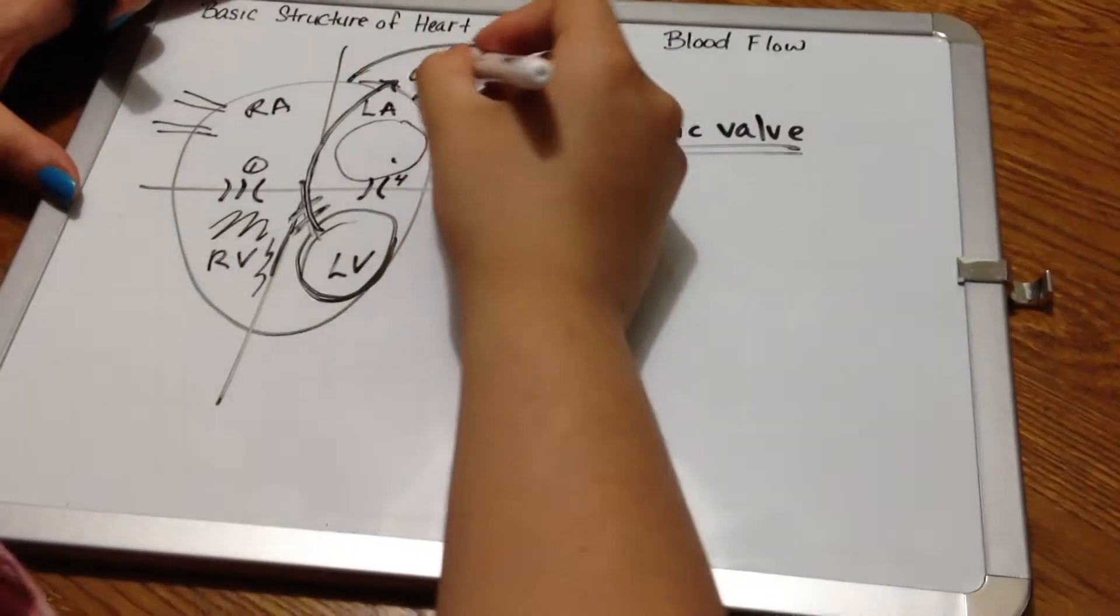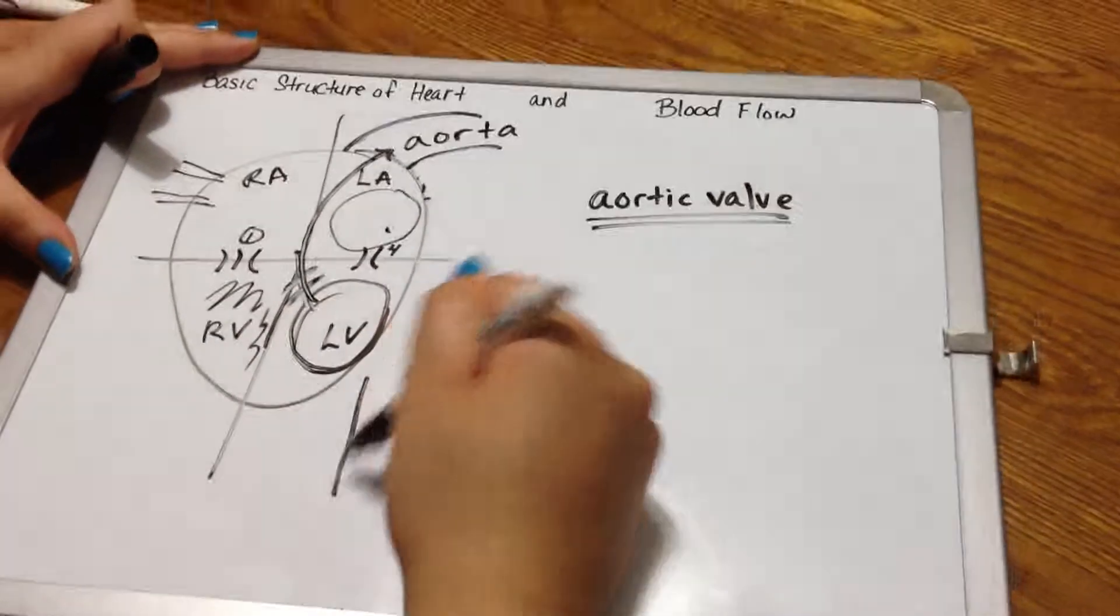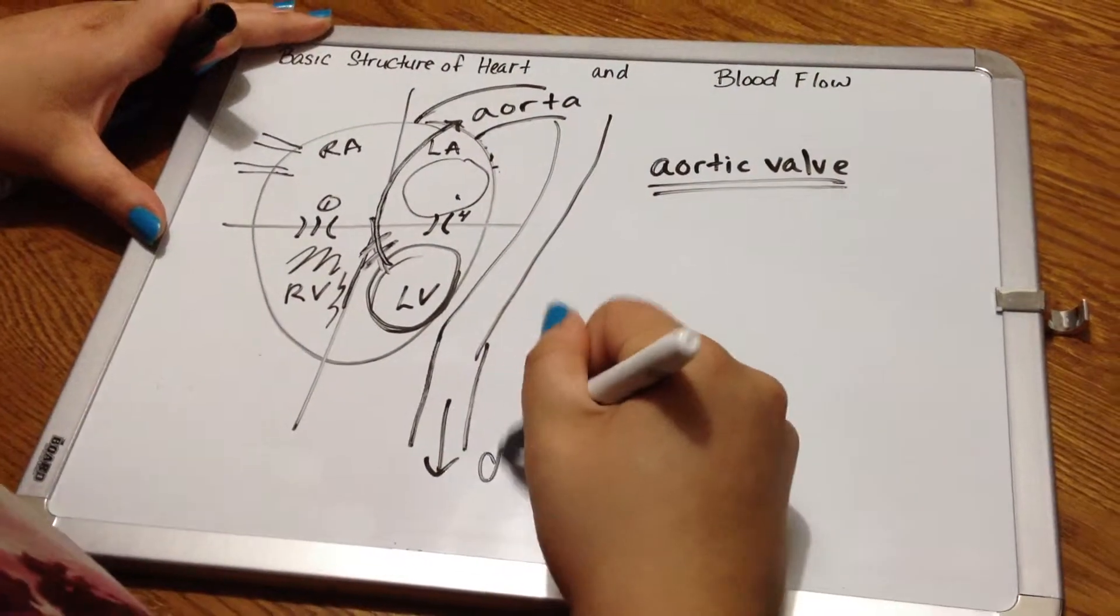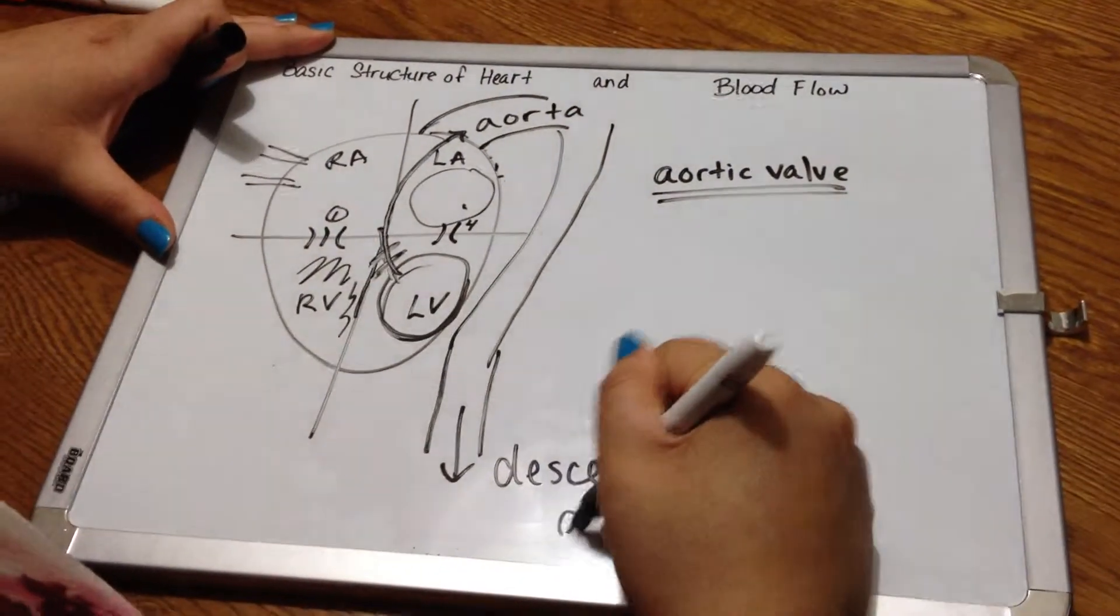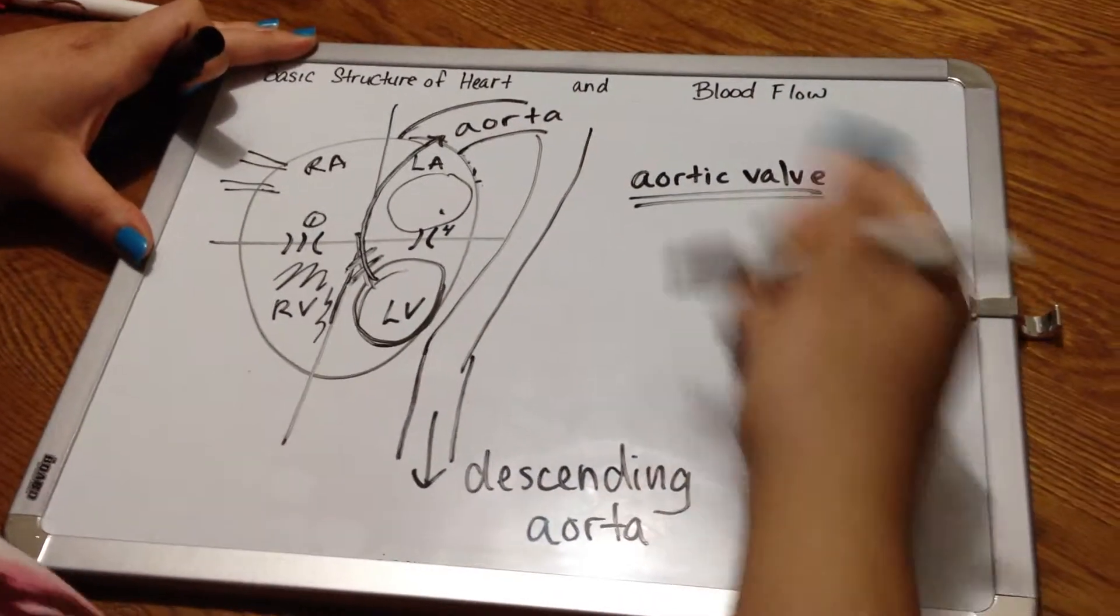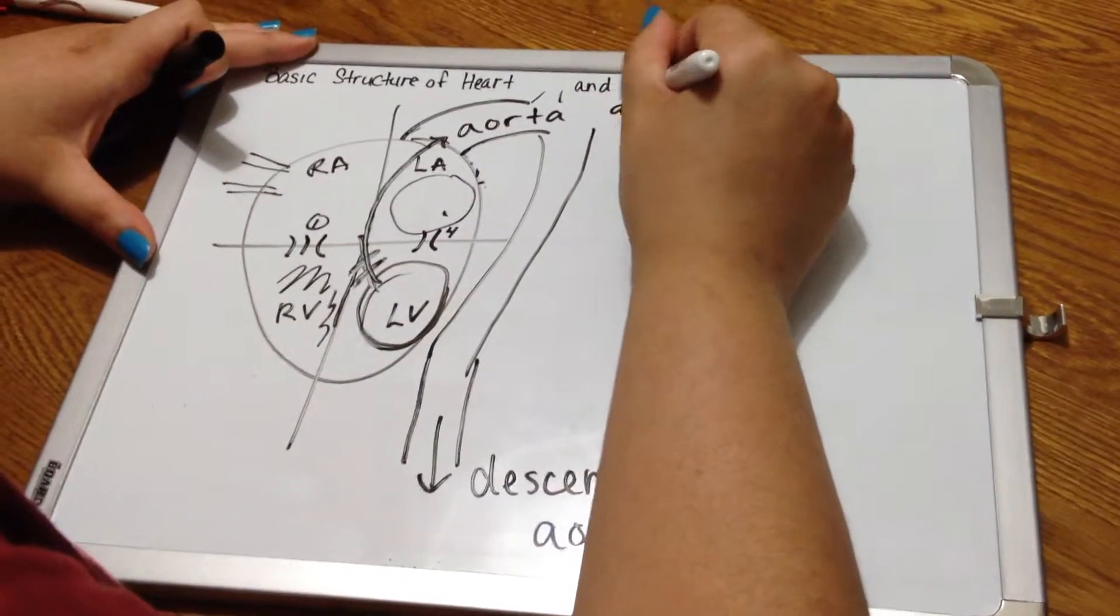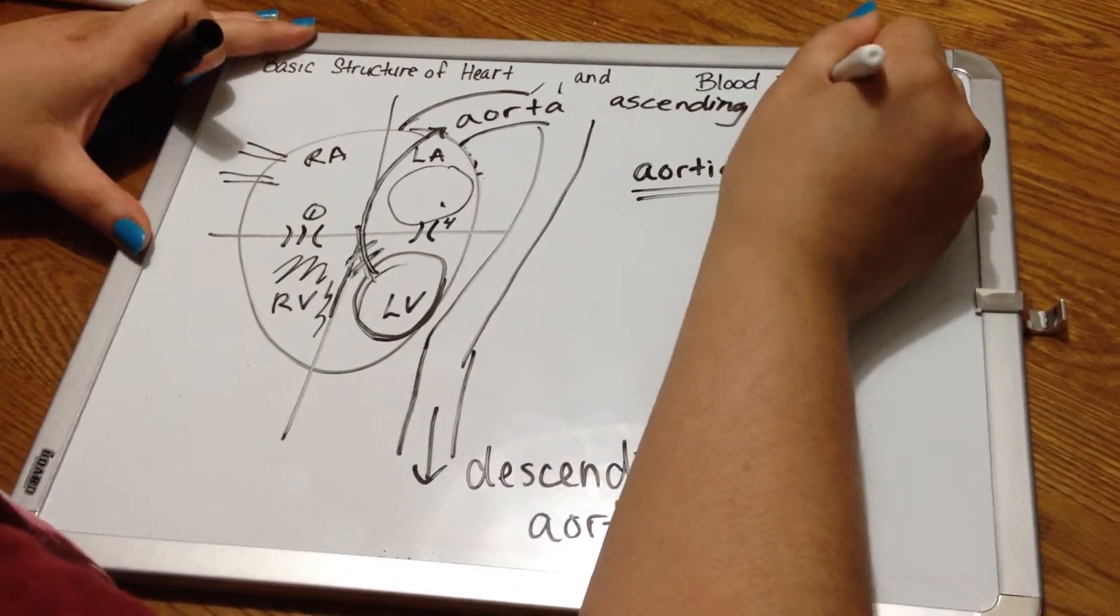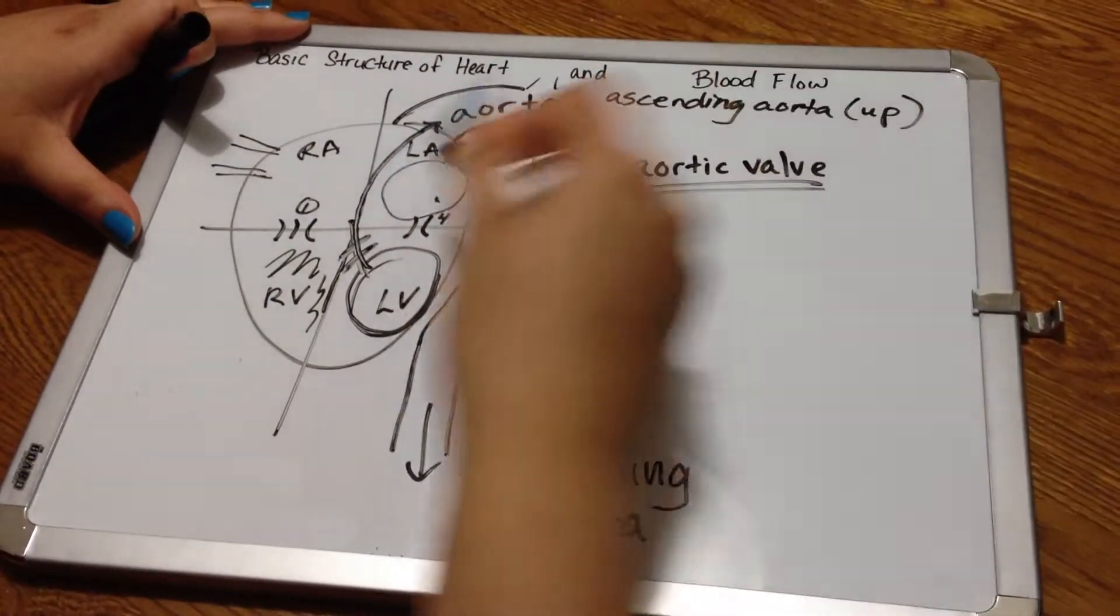Now, the aorta has descending parts, so that means there's a part that actually goes down. That's the descending aorta, because it goes downward. And there's a part that is called the ascending aorta, and that goes up. So, the aorta.